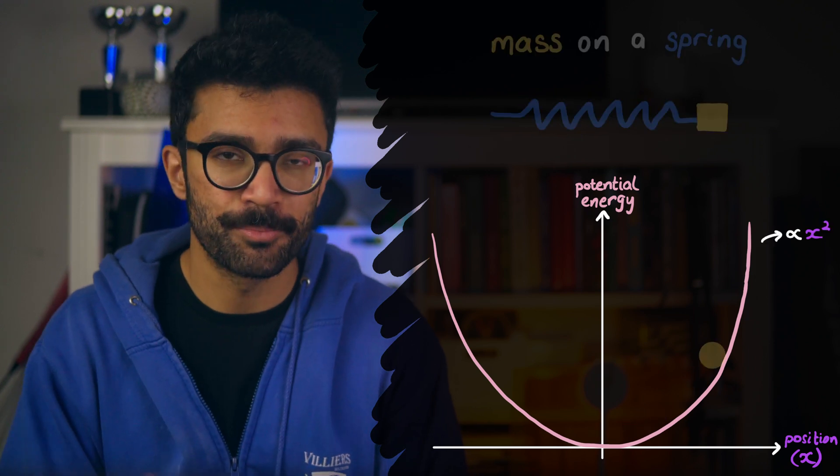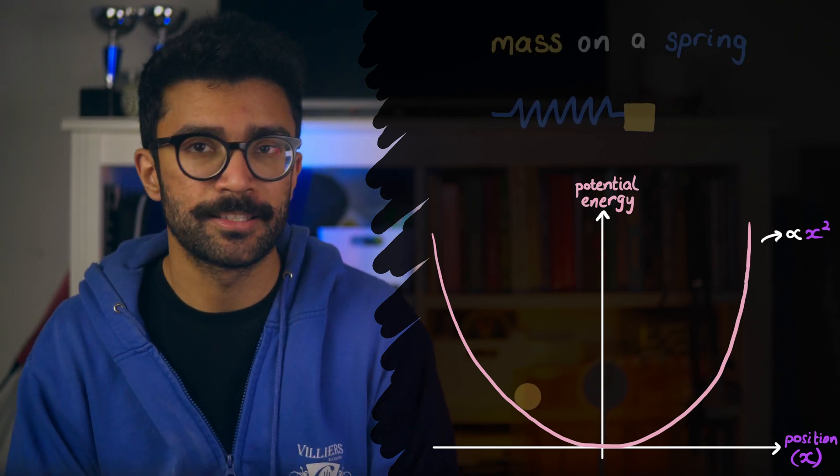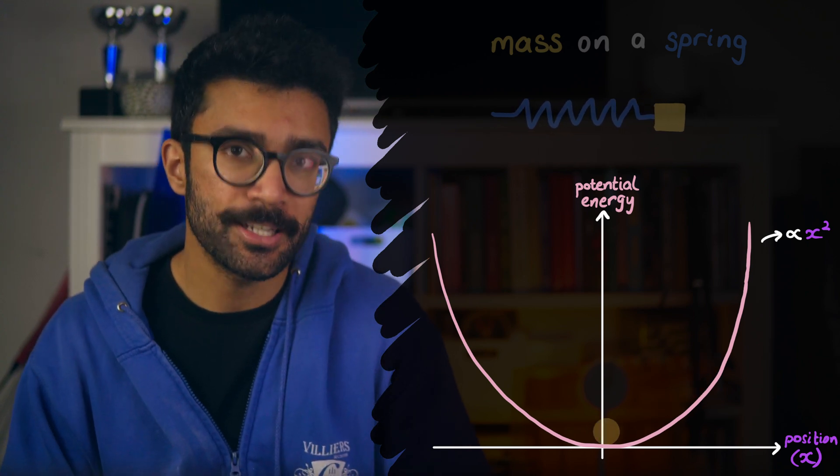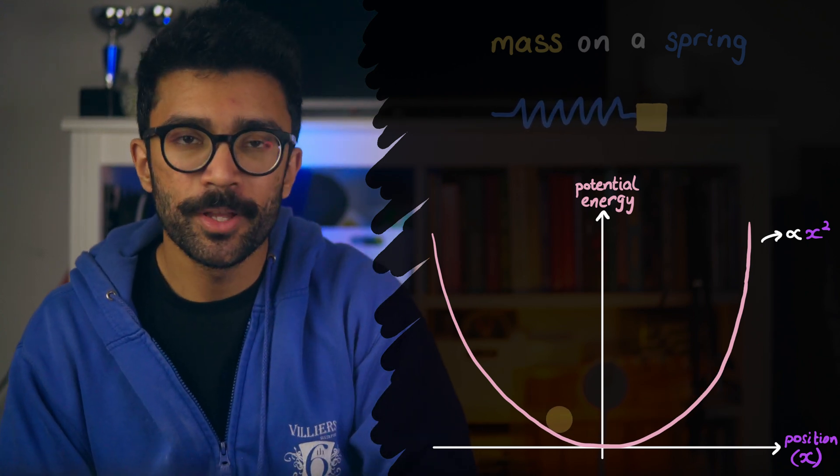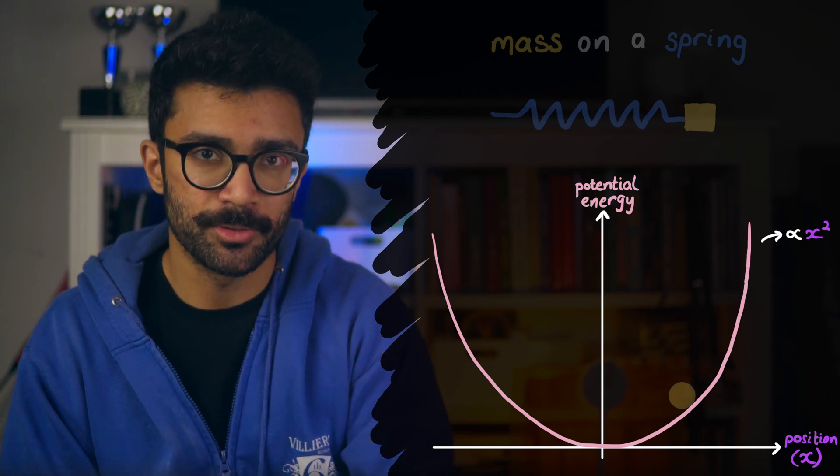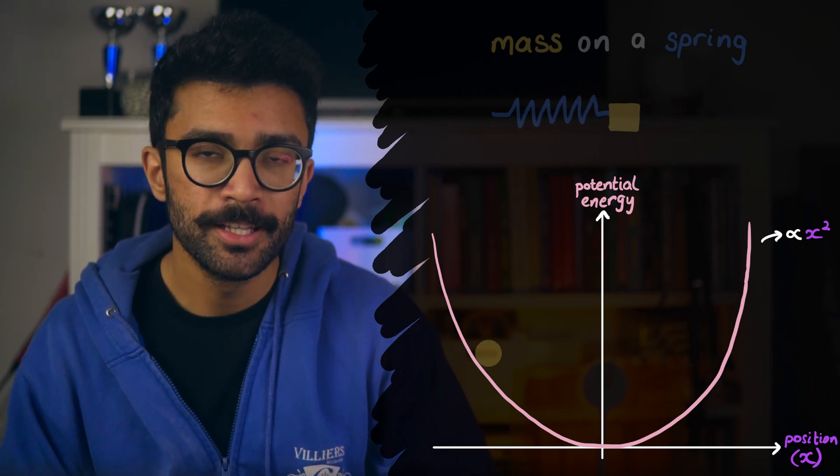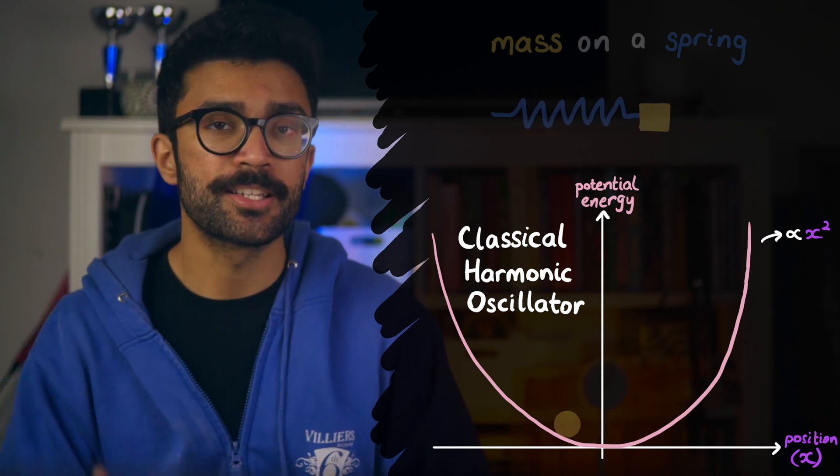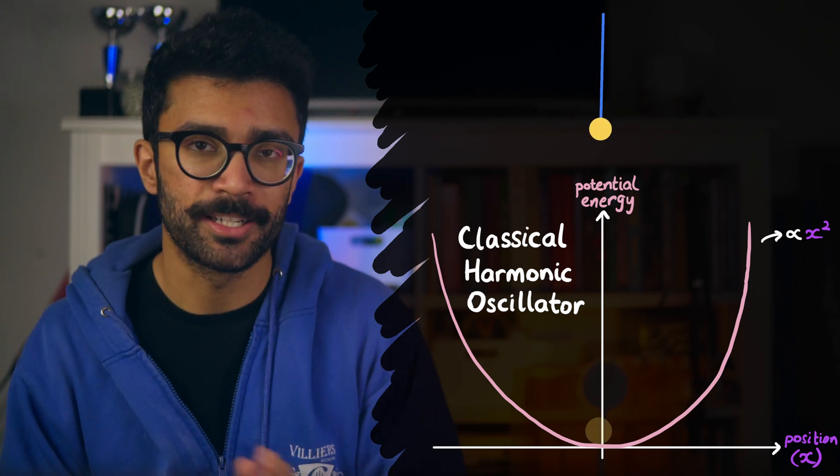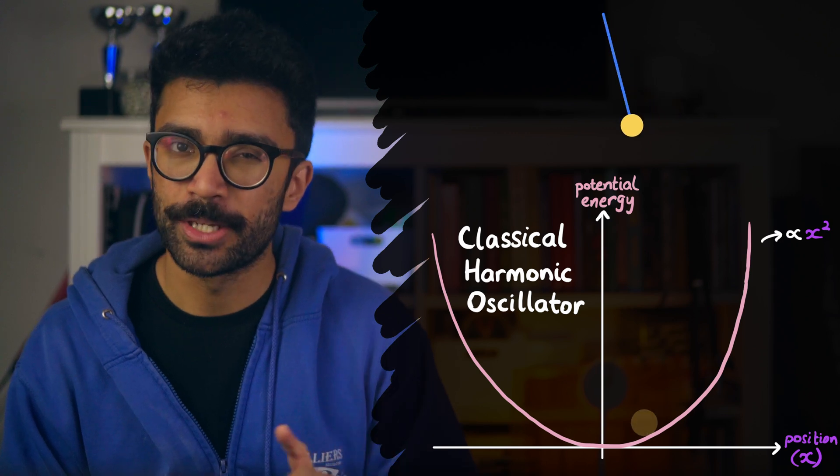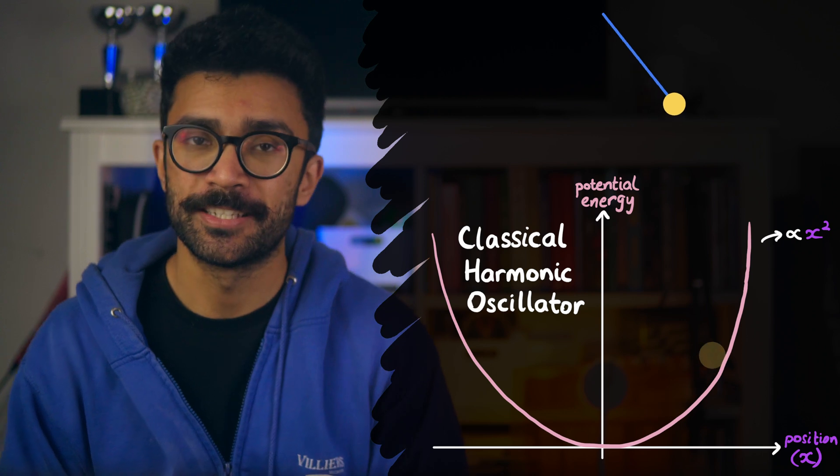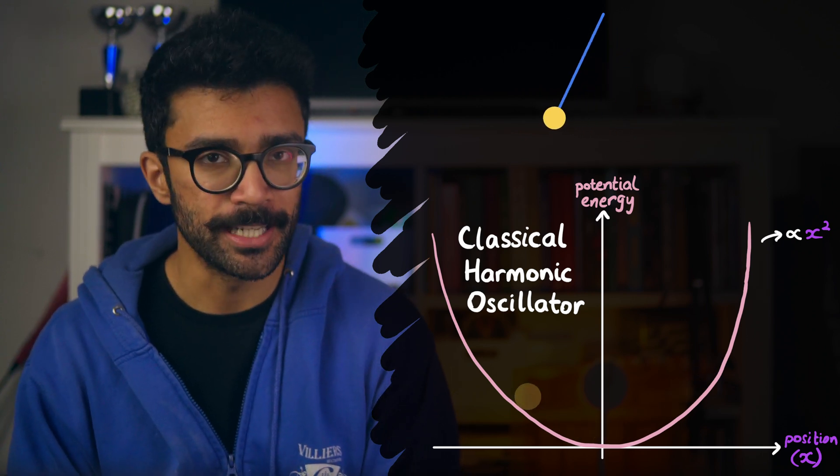In this case, it's the potential energy that's proportional to x squared, where x represents the position of the mass away from the central position where the spring is at its natural length. This kind of system, one that experiences a quadratic potential energy, or in the shape of a parabola, is known as a classical harmonic oscillator. Another example of this is a pendulum swinging back and forth, if the swings are generally quite small in angle away from the equilibrium position. Classical harmonic oscillators are very useful systems to study, because there are also quantum mechanical versions of this.